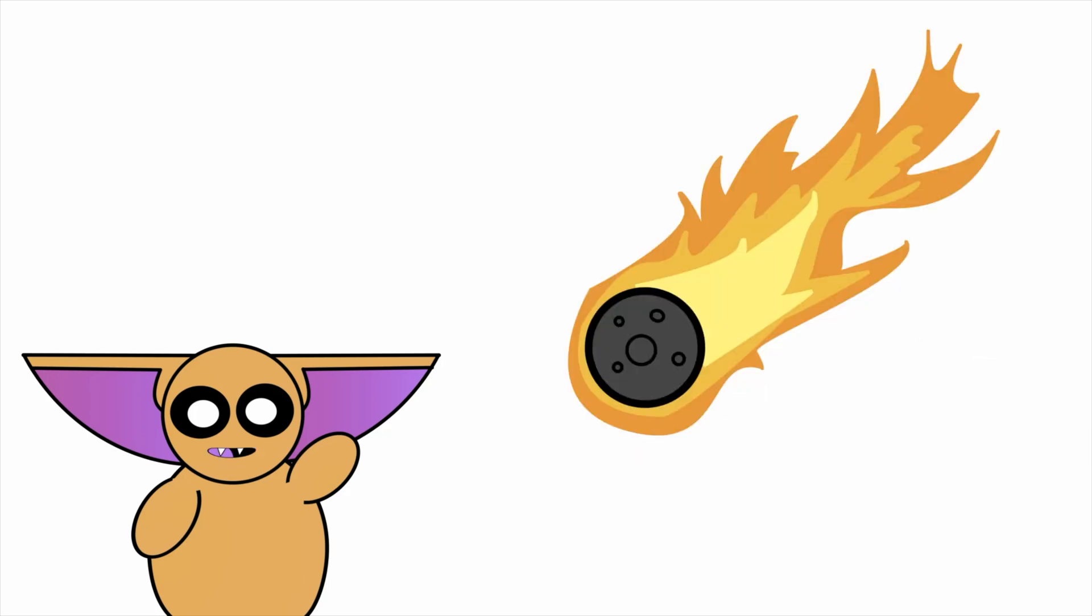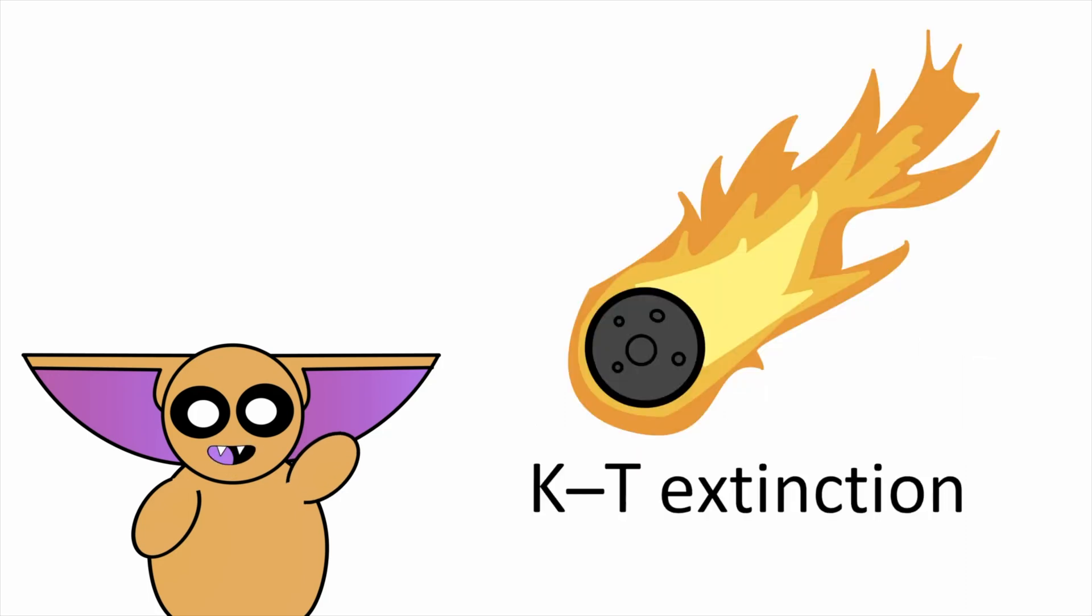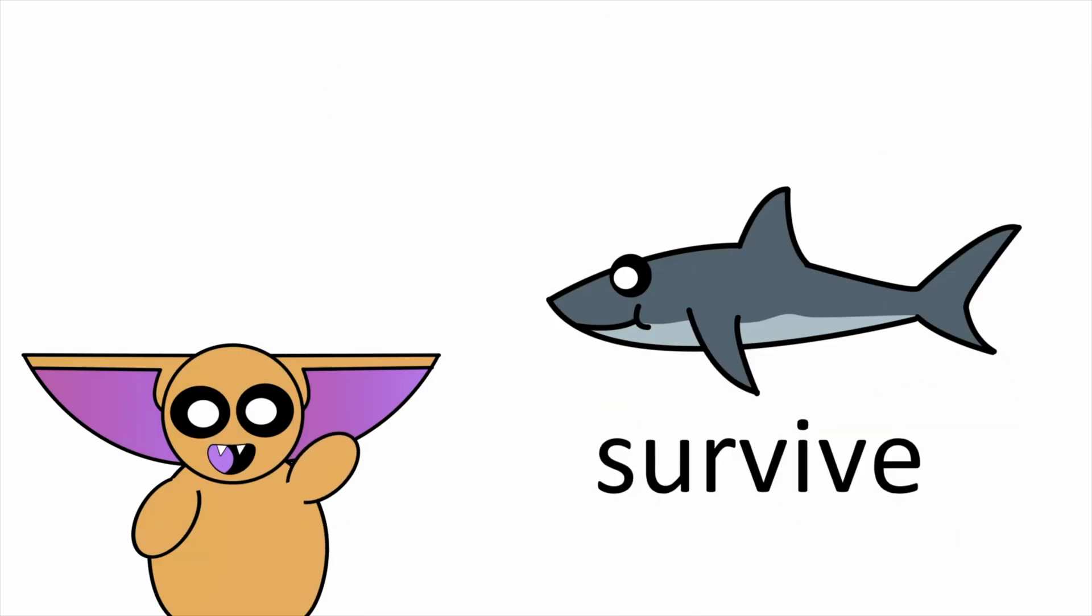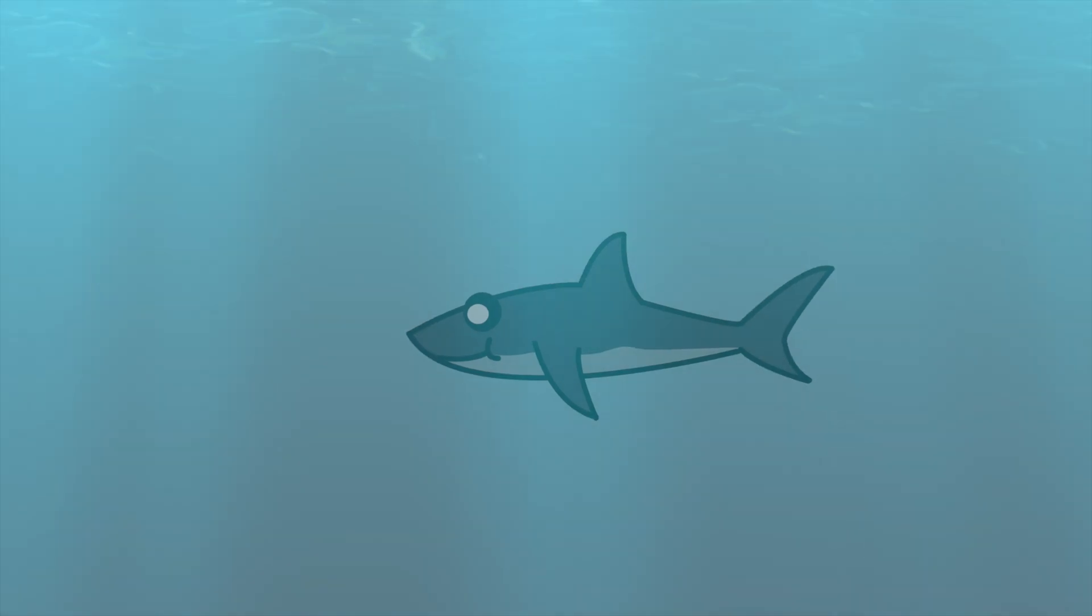Sharks are incredible survivors, even managing to survive the KT extinction, a catastrophe that wiped out 75% of all life on the planet. Not only did sharks survive this catastrophe, but they managed to bounce back bigger than ever, taking on the role as the ocean's top predator and never looking back.